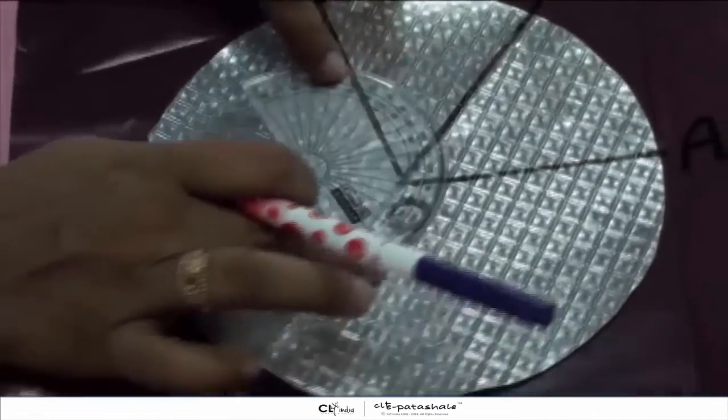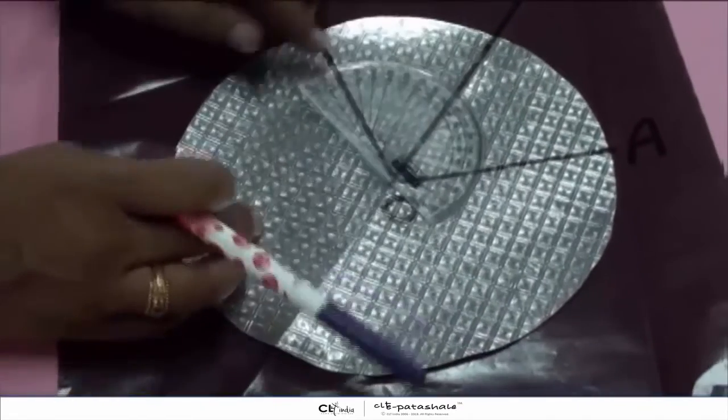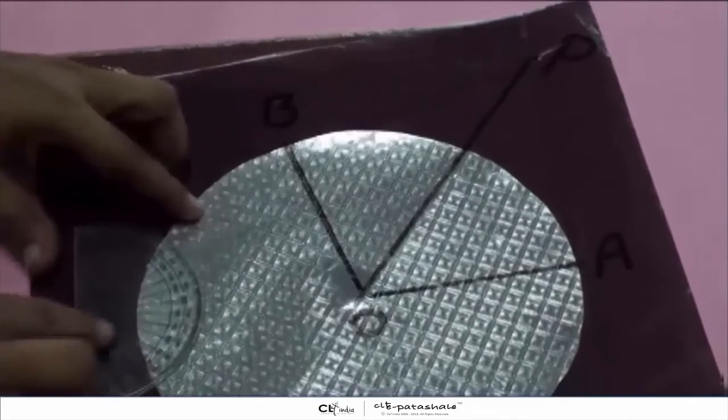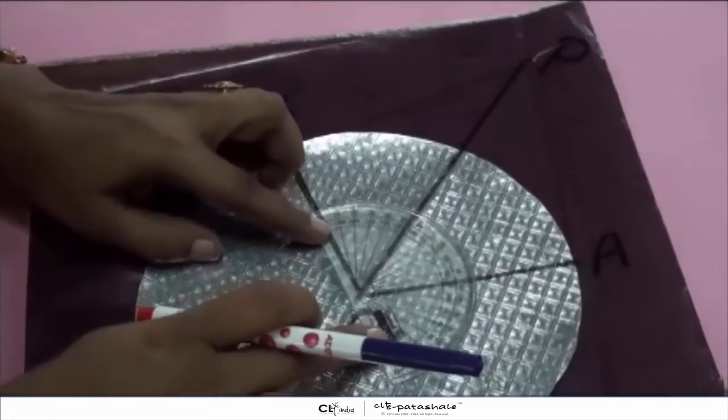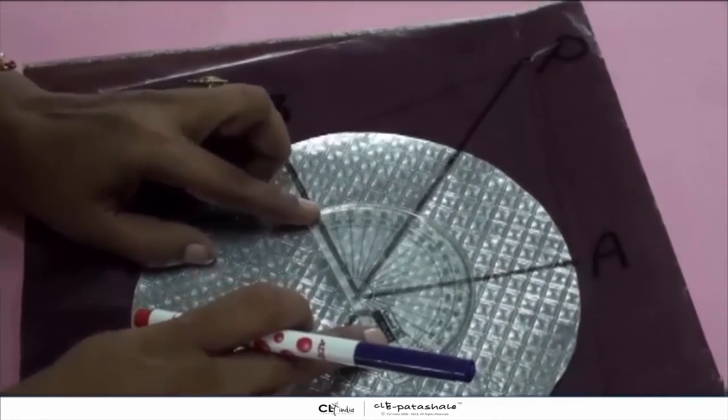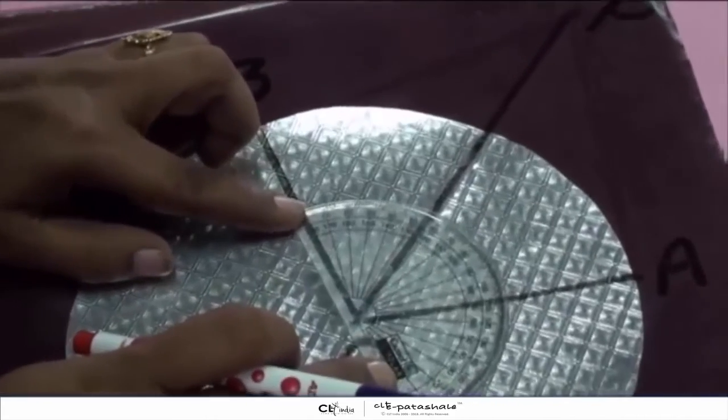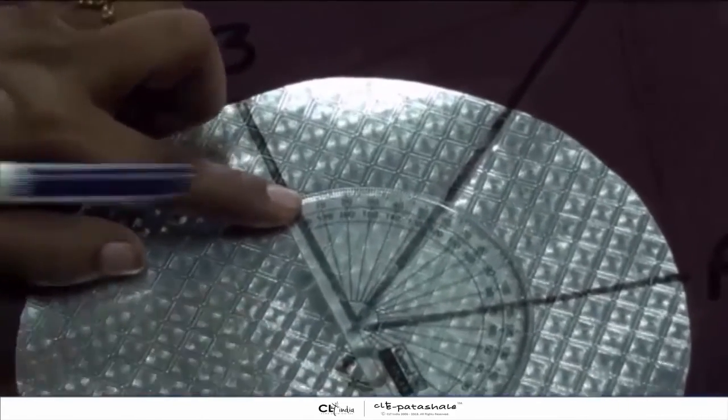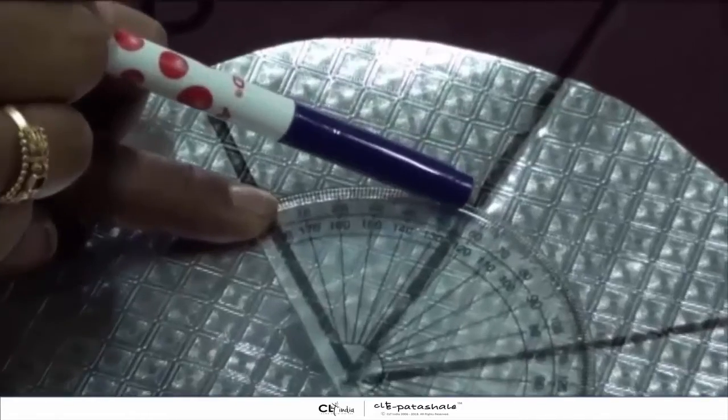Now use your protractor. We will measure angle BOP. So keep your protractor. So angle BOP is equal to 55 degrees.